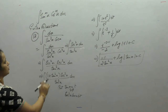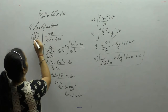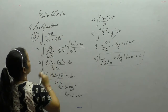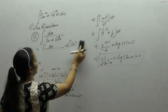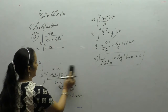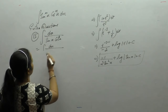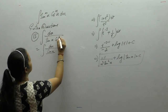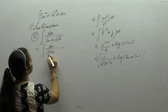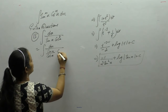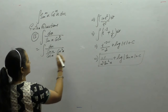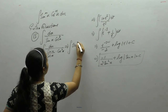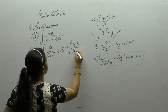In the next question: integral of 1 upon sin x and cos cube x. Here we divide and multiply by cos x, giving sin x upon cos x in the numerator. Cos cube x into cos x is cos 4, so 1 upon cos 4 is sec 4x upon tan x.